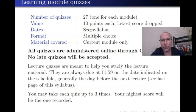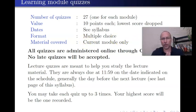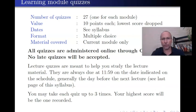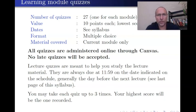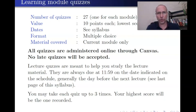The dates are listed on the syllabus. The format is always multiple choice covering a given learning module. All quizzes will be given online through Canvas, and no late quizzes will be accepted. The due dates are posted on the syllabus and those due dates are final. As soon as that due date comes — midnight of that date — the quiz disappears and you won't be able to get to it again. So do make sure you plan your time and get the quiz done before the deadline.